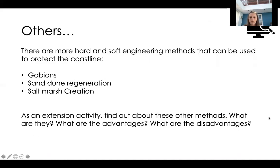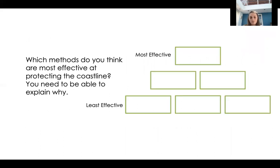Once you've written your notes in the table, there are a few more methods to research as an extension activity: gabions, sand dune regeneration, and salt marsh creation. Find out what they are and their advantages and disadvantages. Then, rank six methods in a triangle — the most effective at the top, two equally effective in the middle, and three least effective at the bottom. Make sure you can explain why you've chosen the most effective method.